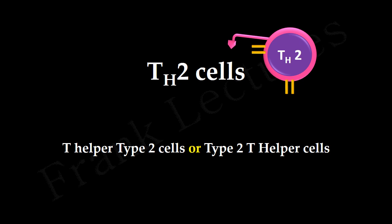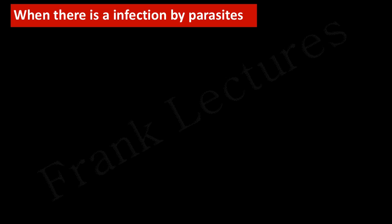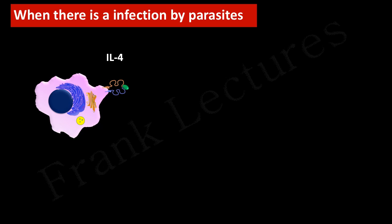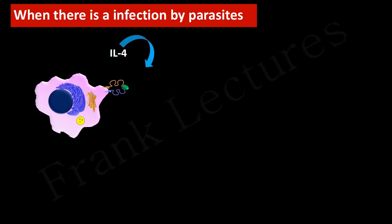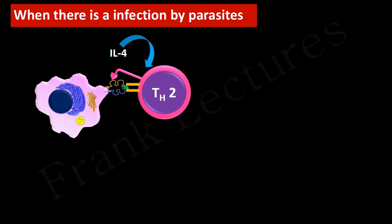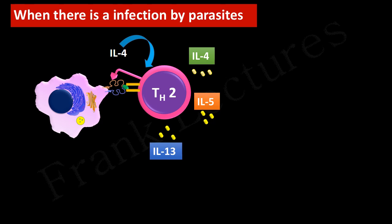T helper type 2 cells. When there is an infection by parasites such as helminthic parasites, the cells of innate immunity release interleukin-4. The naive T cell recognizes the antigen presented by the dendritic cell and, in the presence of interleukin-4, this naive T cell differentiates into a T helper type 2 cell. This cell now starts secreting interleukin-4, interleukin-5, and interleukin-13.